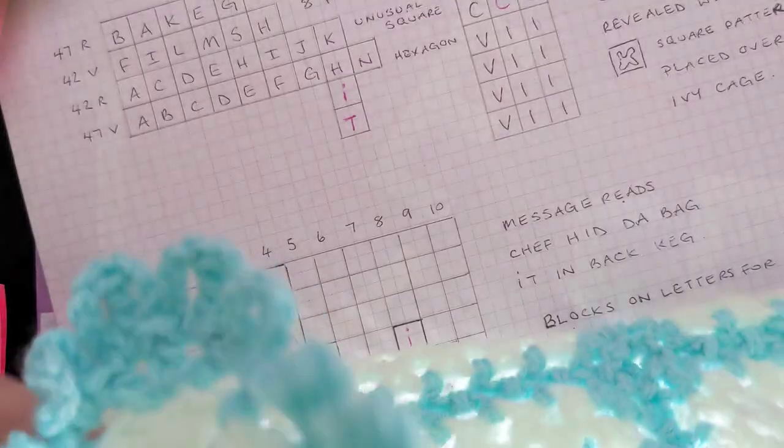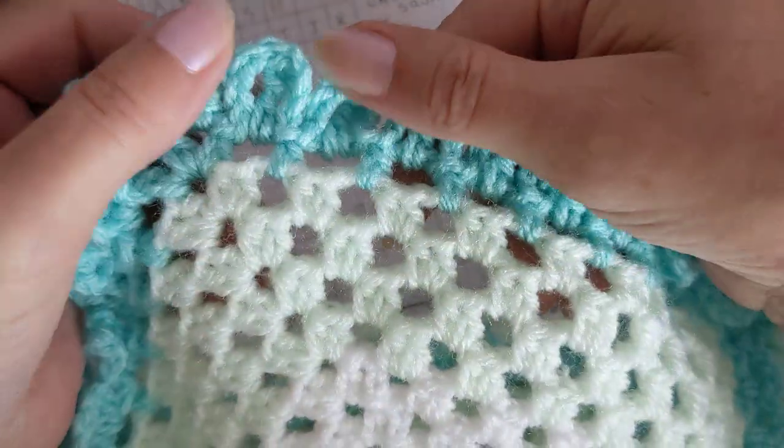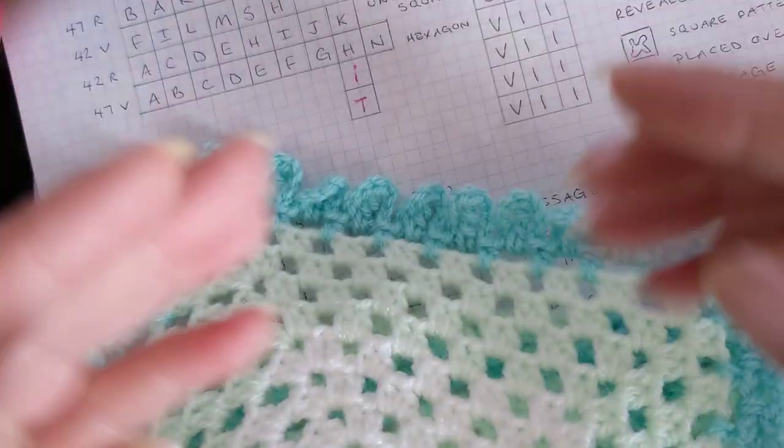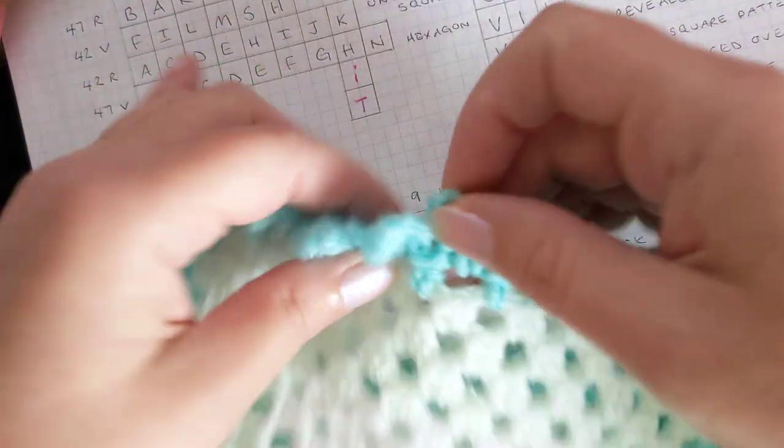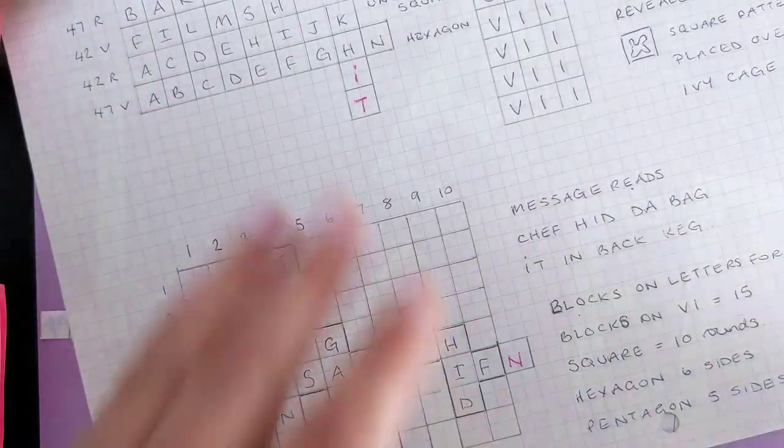When you add the edges on that, you get 88 - eight and eight. Inside the Voynich manuscript, this is representing the double treble crochet stitch.